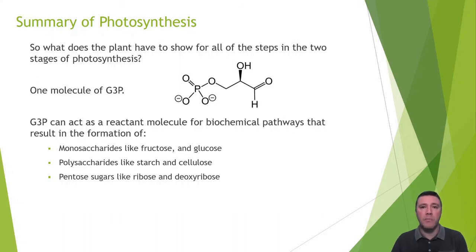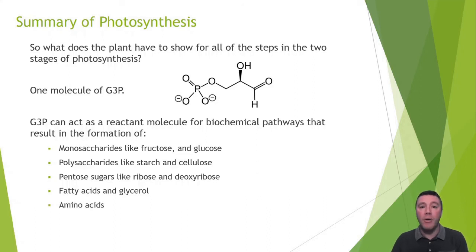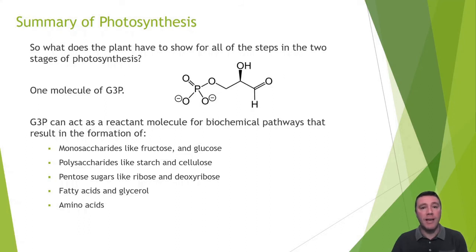G3P is more than just a foundation molecule for carbohydrates. G3P also participates in metabolic pathways that produce glycerol and fatty acids necessary for the construction of lipids. More than that, G3P is also part of the metabolic pathways that form metabolites like oxaloacetate and pyruvate that can be used in the formation of amino acids. Additionally, some of those amino acids made possible by G3P are reactants in metabolic pathways that yield the nitrogenous bases found in DNA and RNA. Photosynthesis makes possible all of the building blocks that go into the formation of every macromolecule of life: carbohydrates, proteins, lipids, and nucleic acids.